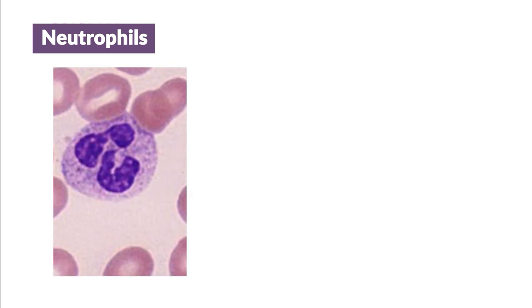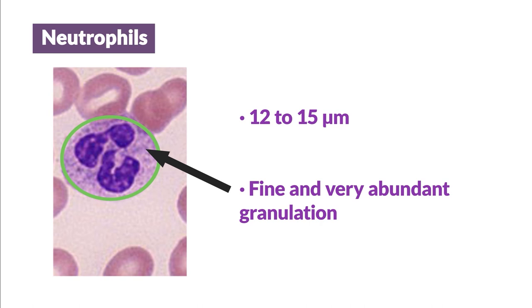Granulocytes. Neutrophils. They range in size from 12 to 15 micrometers in diameter. The granulation of neutrophils stains less intensely, giving a more or less purple bluish color to the cytoplasm. They have a fine and very abundant granulation.